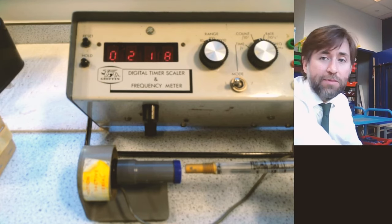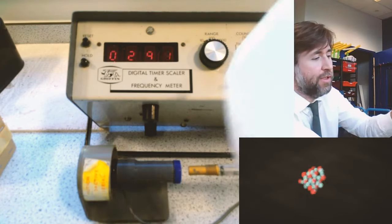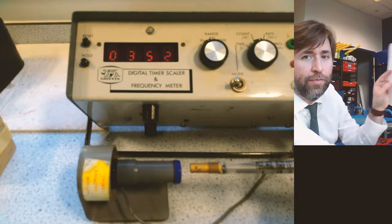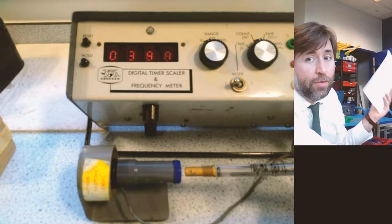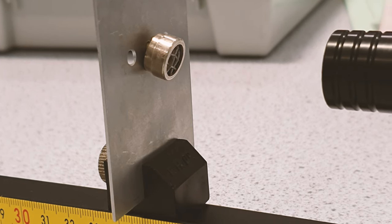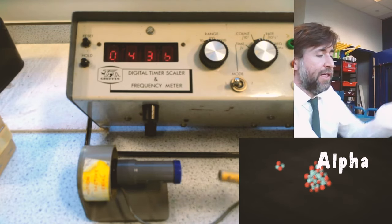Now americium is mainly an alpha emitter but not entirely. So when I put some paper in front of it you should see the count level will drop quite considerably. But also, as alpha, it only has a very short range in air. In fact, increase that distance to about four centimeters.